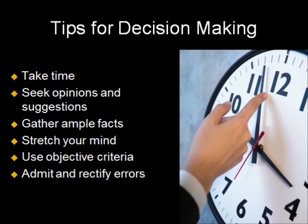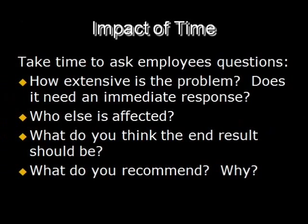As a supervisor, you'll often be required to make snappy decisions, but try to take as much time in coming up with decisions as possible. Seek as many opinions and suggestions from experienced people as you can. Get as many facts together as you can. Keep an open mind. Use objective criteria rather than biased information, and admit and rectify any mistakes that you make. Supervisors cannot go through the decision-making process for every problem they face — program decisions don't usually require this, but non-program decisions do.